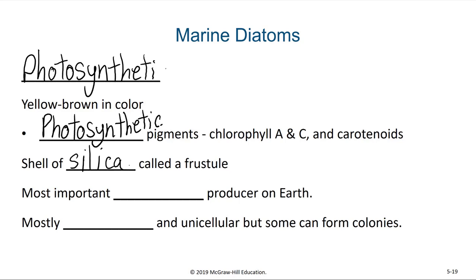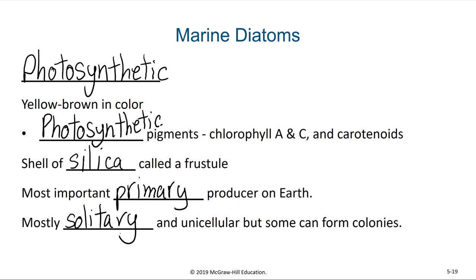Diatoms are among the most important primary producers on Earth. They perform a significant amount of photosynthesis occurring on the planet, because so much of the surface of the planet is covered with ocean. While diatoms are not the only phytoplankton, in certain parts of the ocean they are the most abundant and most important. These diatoms are mostly solitary and unicellular; however, some can be colonial.